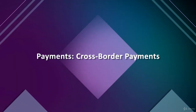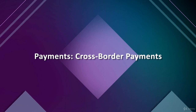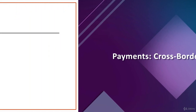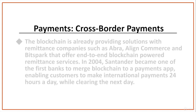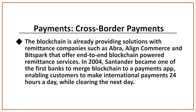Its encryption properties allow insurers to capture the ownership of assets to be insured. Then, cross-border payments. The global payments sector is error-prone, costly, and open to money laundering, and it takes days, if not longer, for money to cross the world. But the blockchain is already providing solutions with remittance companies such as Abra, Align Commerce, and BitSpark that offer end-to-end blockchain-powered remittance services. One bank became among the first to merge blockchain into a payments app, enabling customers to make international payments 24 hours a day while clearing the next day.